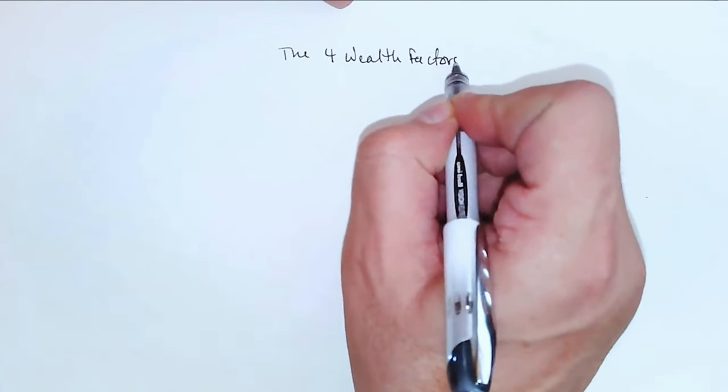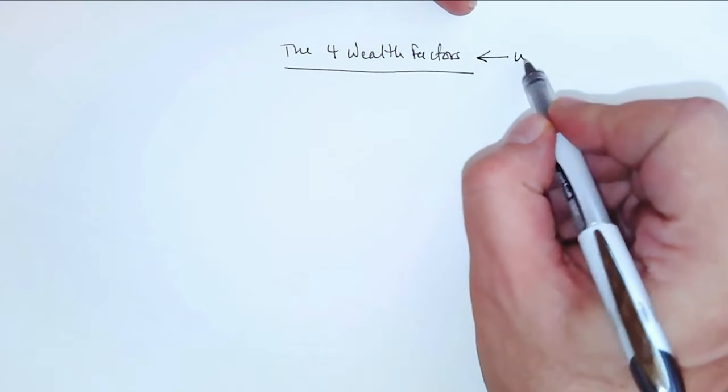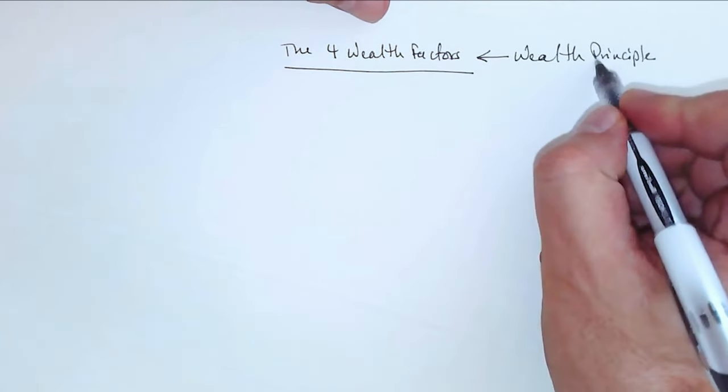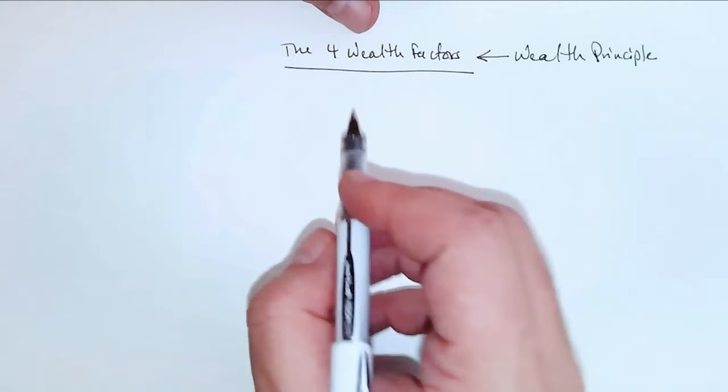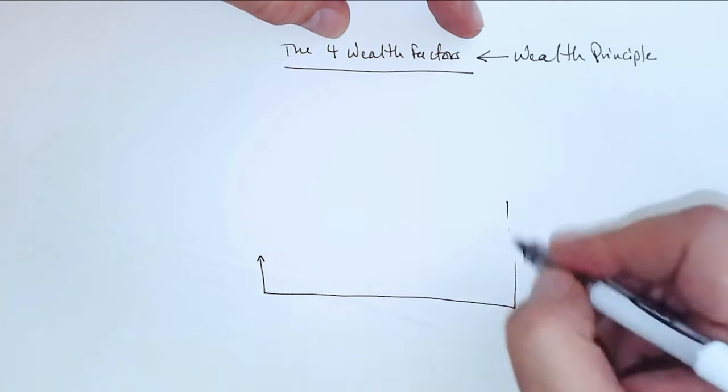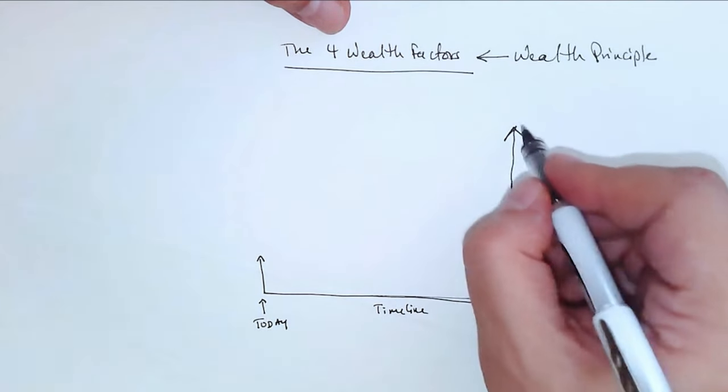Okay, so let's talk about these wealth factors. There are four wealth factors and these are the only four factors there are to building wealth. There are no others. So this is not specific to any asset, this is actually called a wealth principle. This is true no matter if it was a hundred years ago, a hundred years from now, a thousand years ago, today. It's always true and will always be true. It's called the wealth principle. So let's just say that you are here today, okay, this is you and this is a timeline.